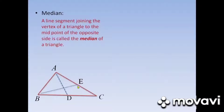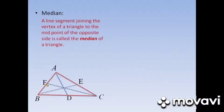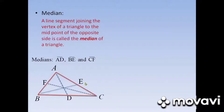BE is a line joining the vertex B to the midpoint of the opposite side AC, in which AE is equal to EC. And CF is a line segment joining the vertex C to the midpoint of AB, in which BF is equal to FA. So the medians of this triangle are line segment AD, line segment BE, and line segment CF.